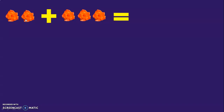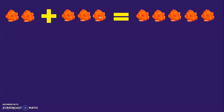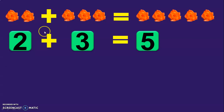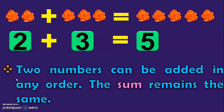Now consider this case where you have 2 flowers with you and your mother buys 3 flowers from the shop for you. What is the total number of flowers with you? Let us count: 1, 2, 3, 4, and 5. You have 2 flowers and your mother buys 3 more flowers. The total will be 1, 2, 3, 4, and 5. So what do we understand from this? Two numbers can be added in any order and the sum remains the same. Here we saw that 3 plus 2 is equal to 5, and 2 plus 3 is also equal to 5.